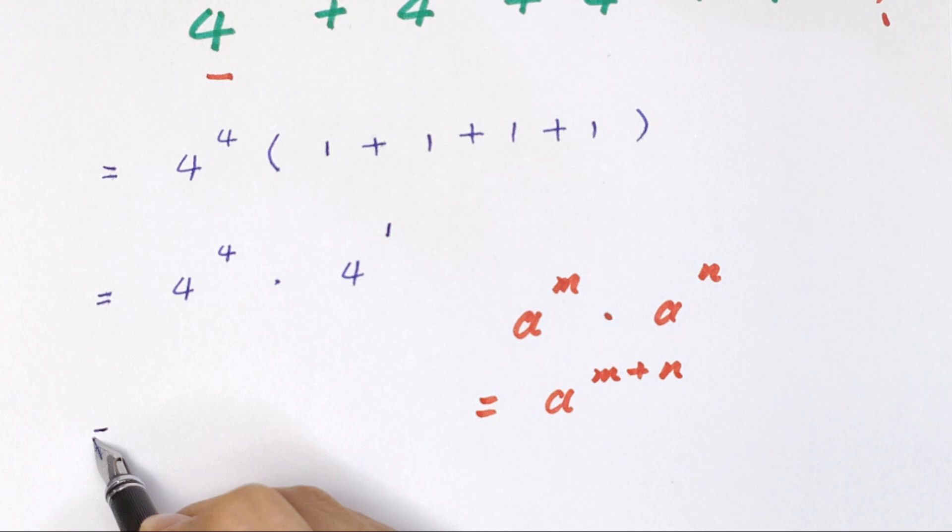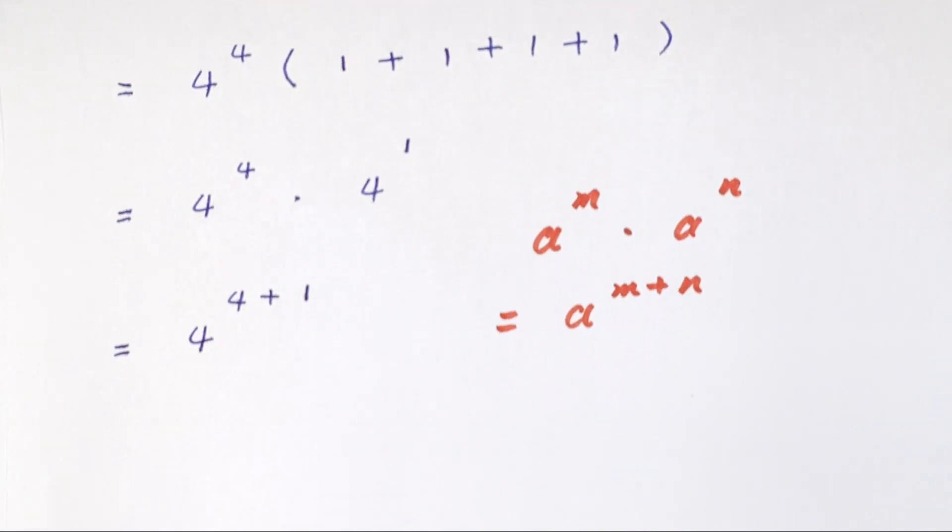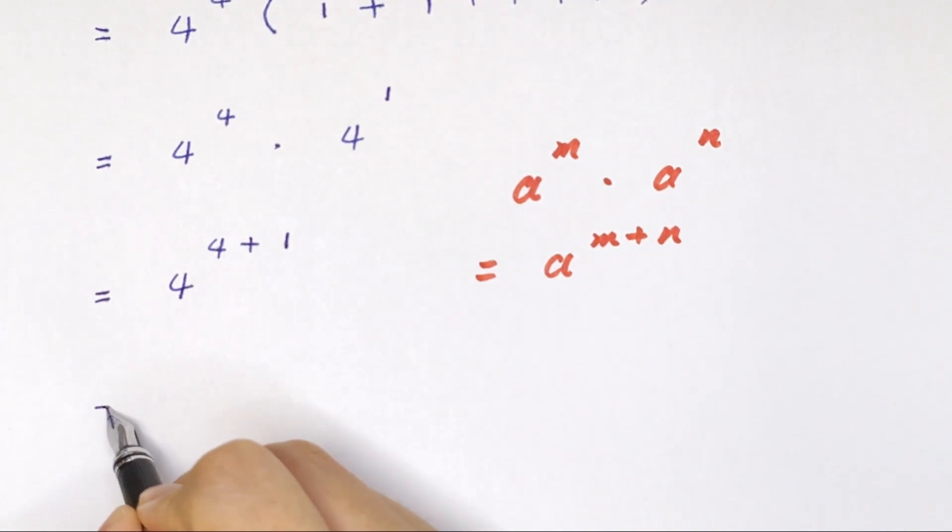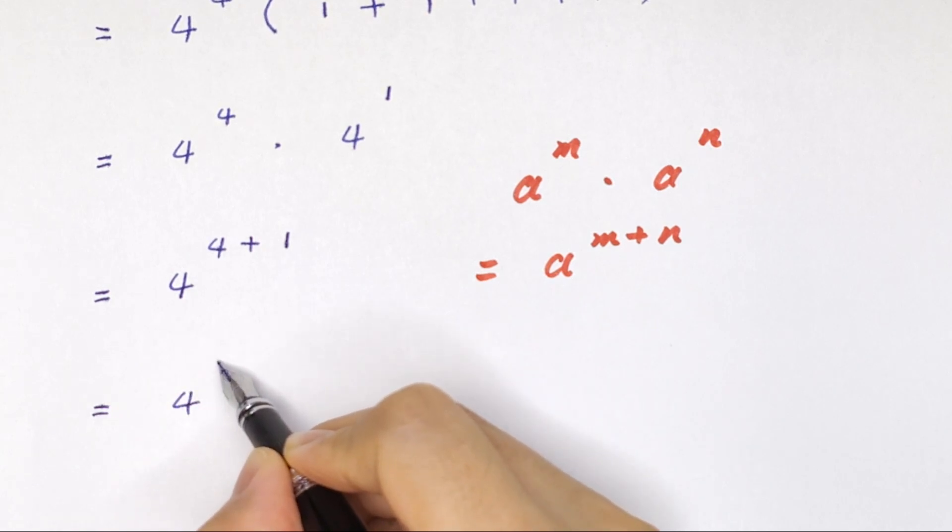So in here it is 4 to the power of 4 plus 1. So the final answer is 4 to the power of 5.